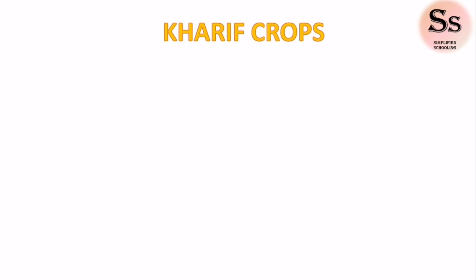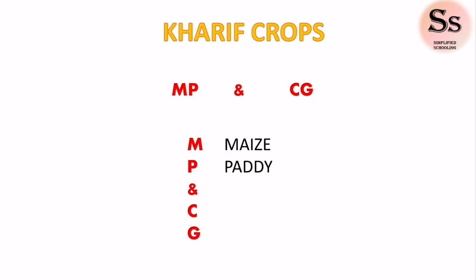In order to remember the examples of kharif crops, just remember MP and CG, that is Madhya Pradesh and Chhattisgarh. M stands for maize, P stands for paddy, and the symbol between them you can assume to be the letter S which stands for soyabean, C stands for cotton, and G stands for groundnut.